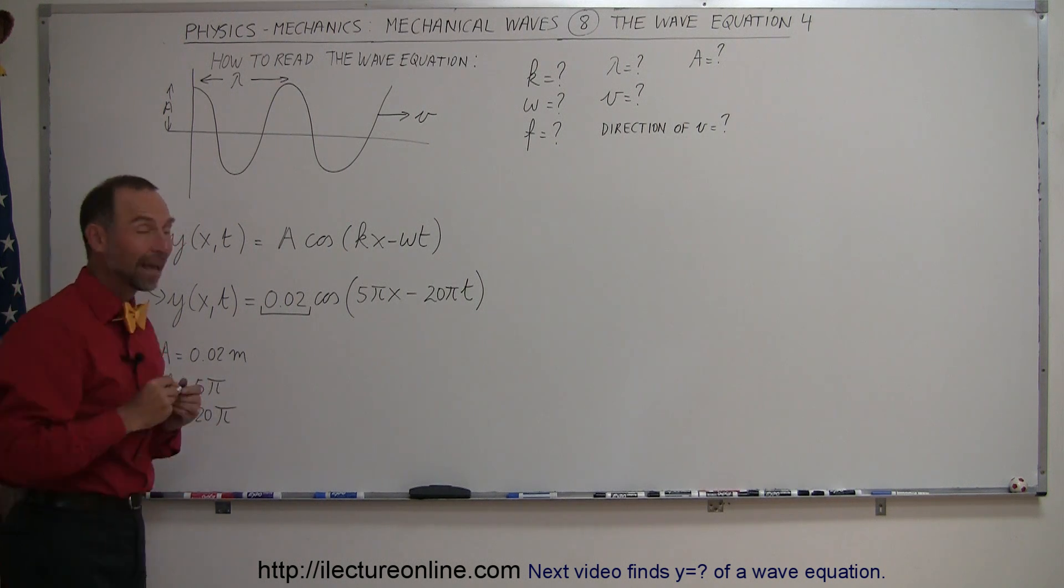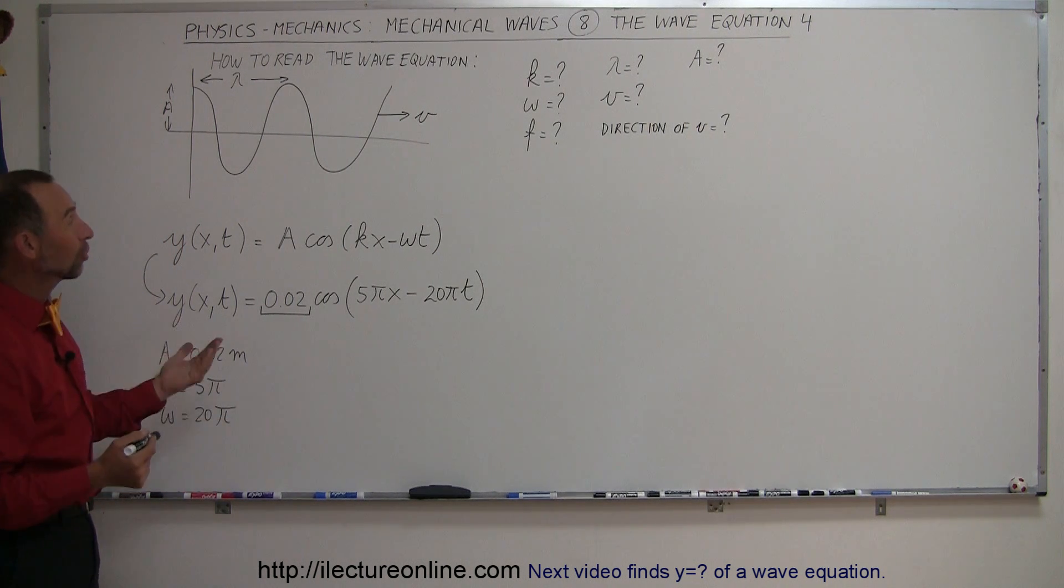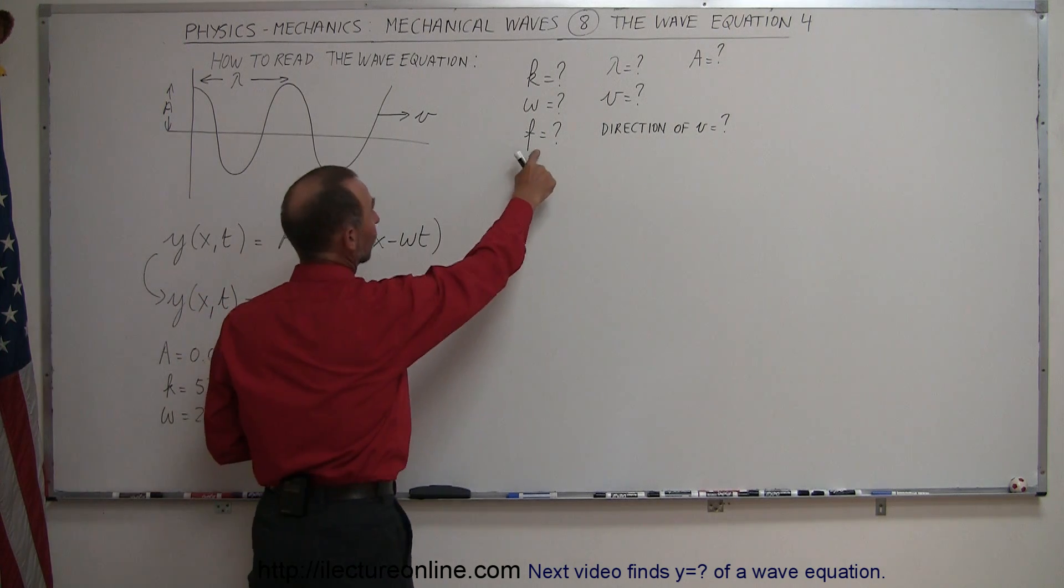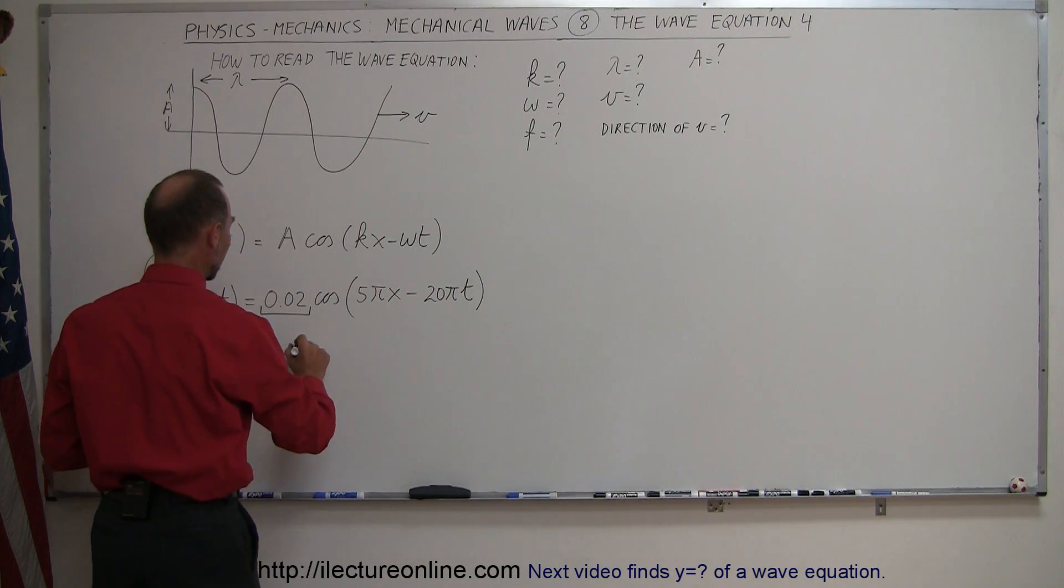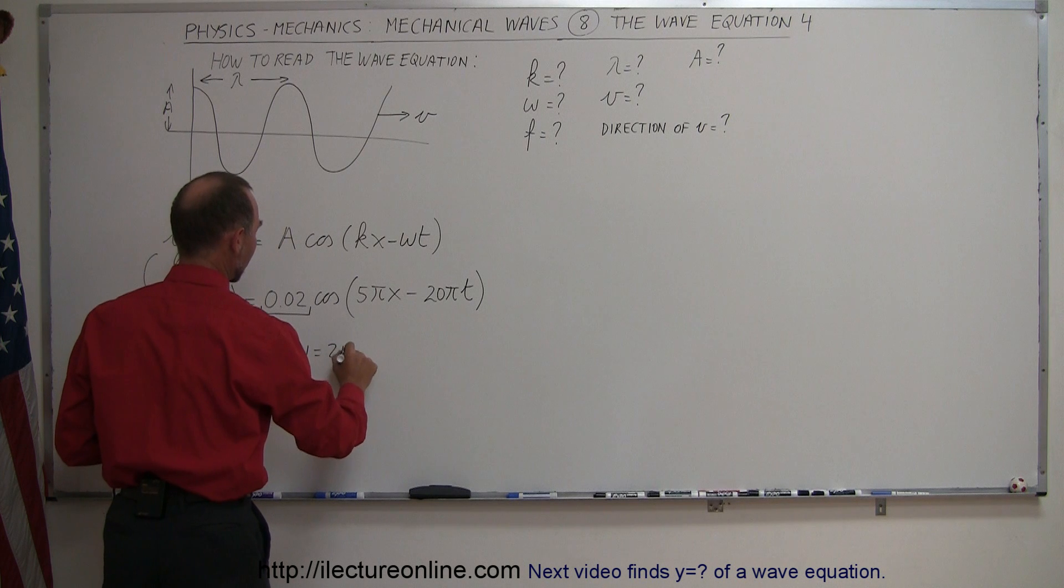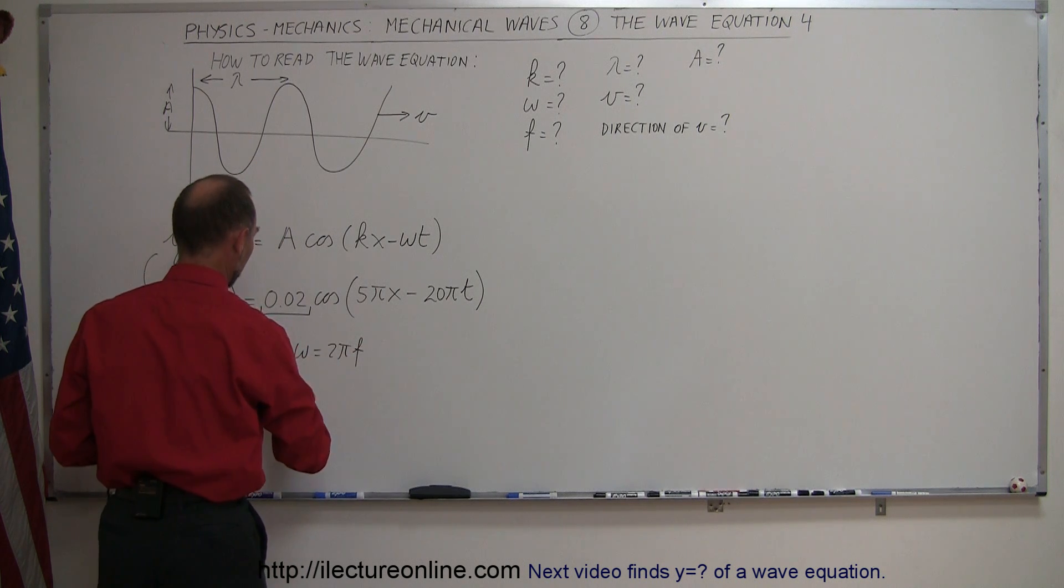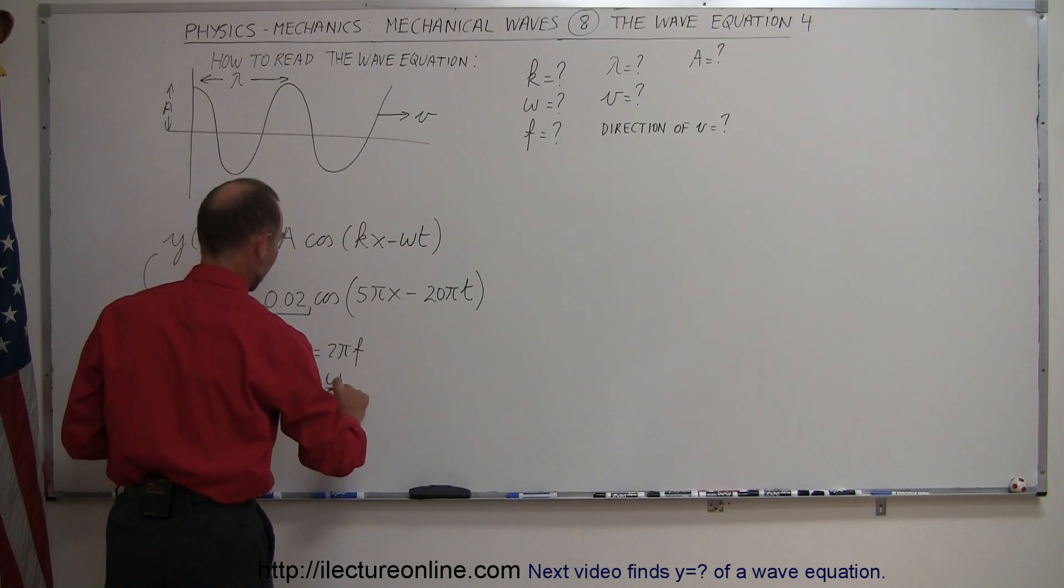All right, so from that, can we figure out the oscillator frequency, the frequency at which this oscillates, which is f. So since we know that omega is equal to 2 pi f, we can then conclude that f is equal to omega divided by 2 pi.